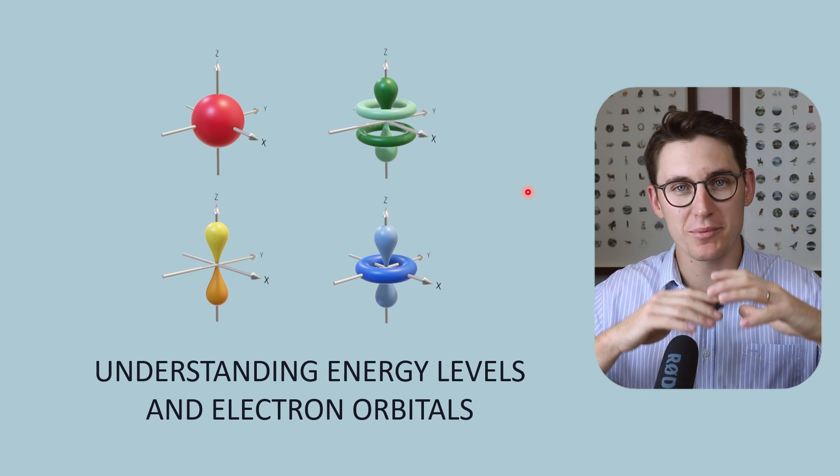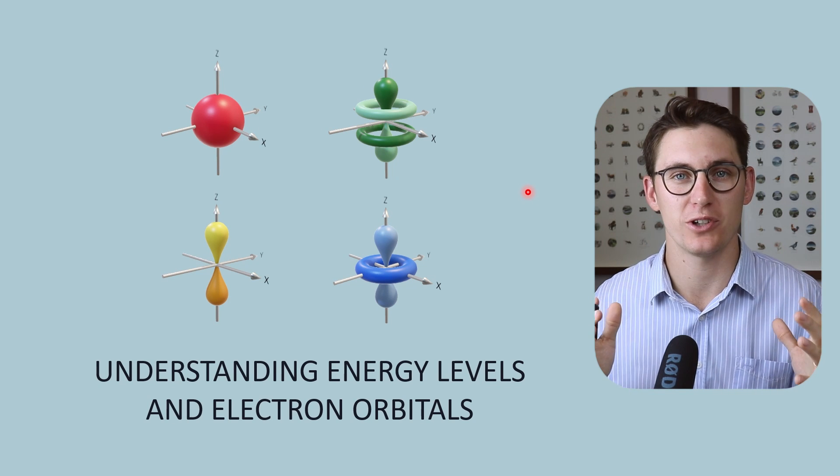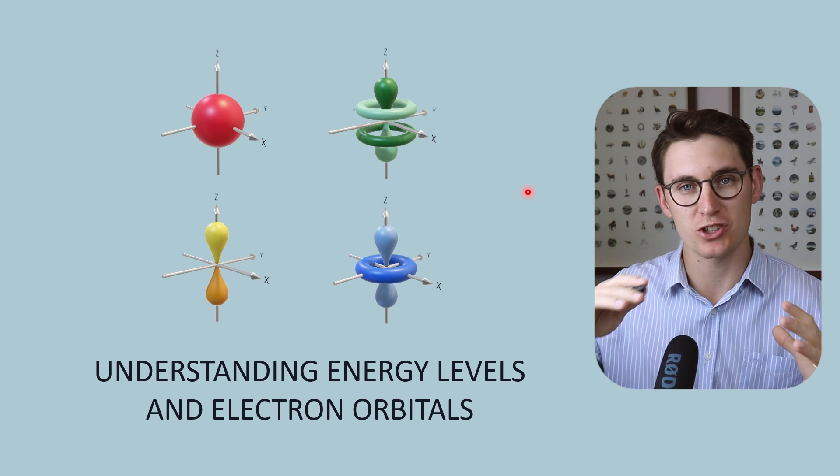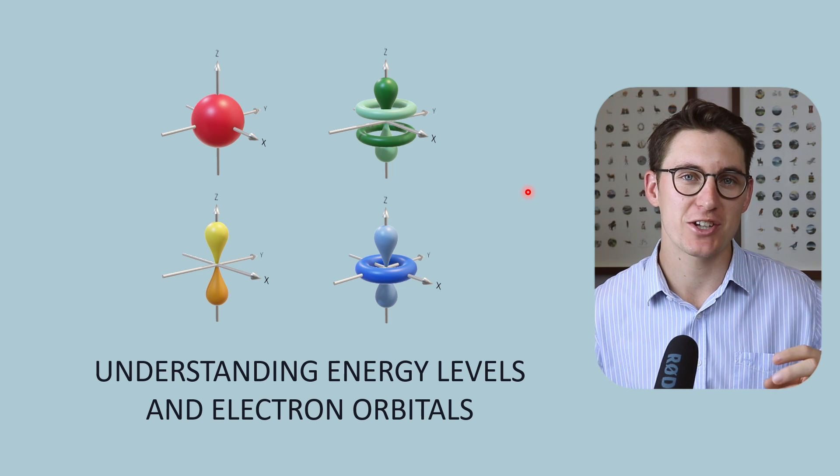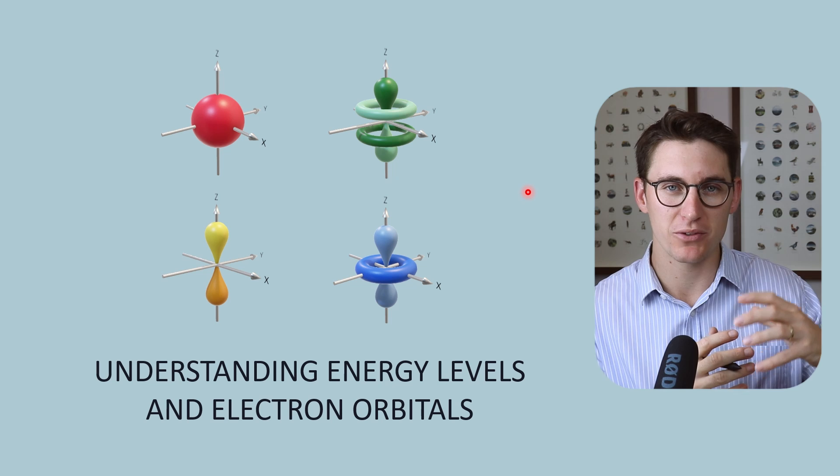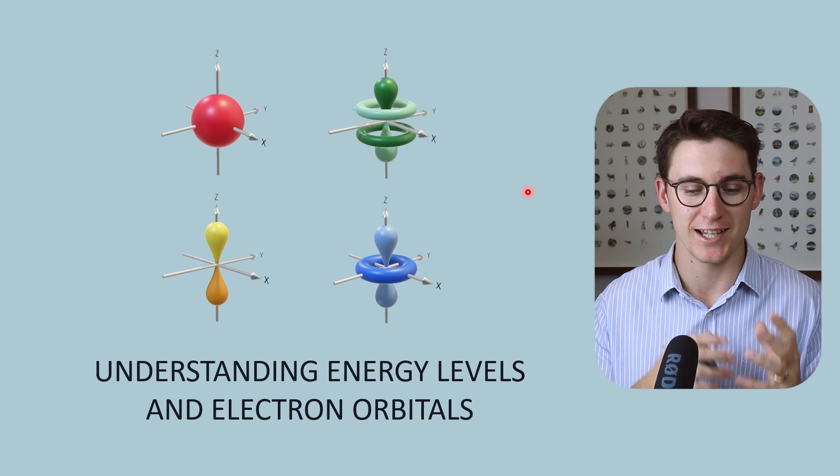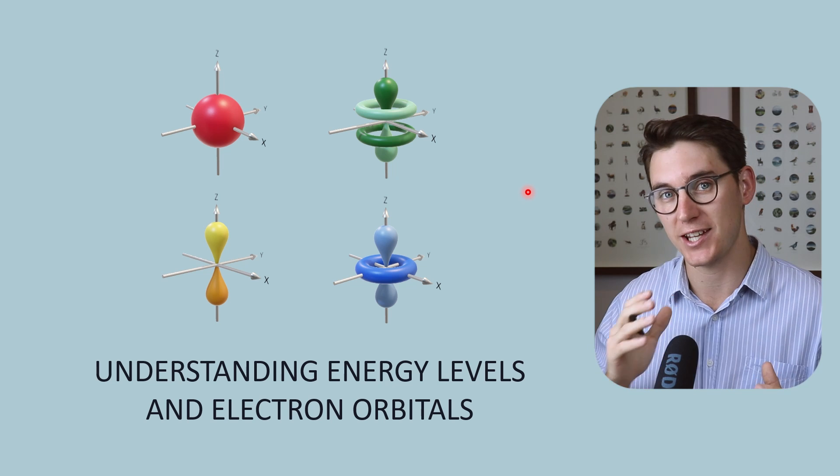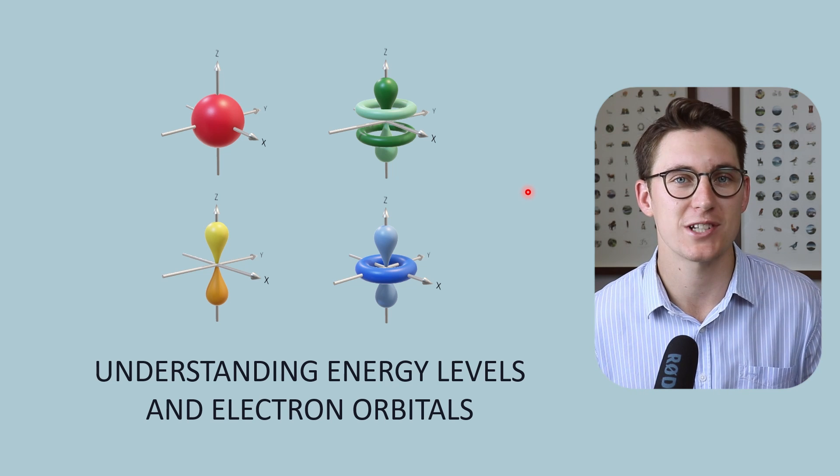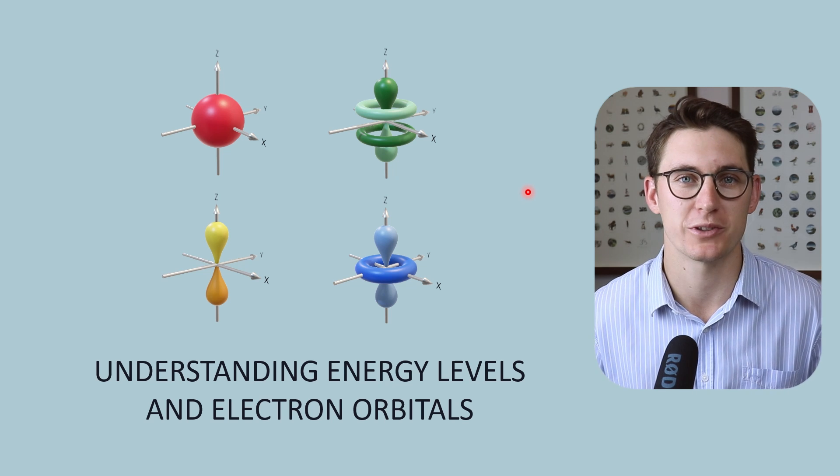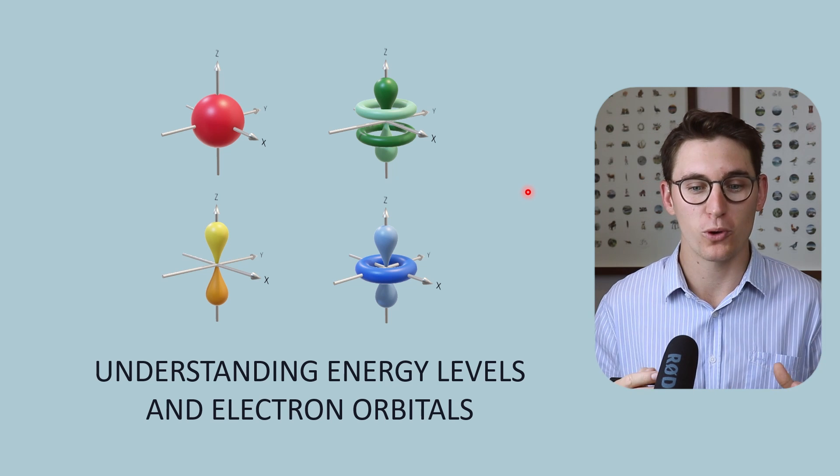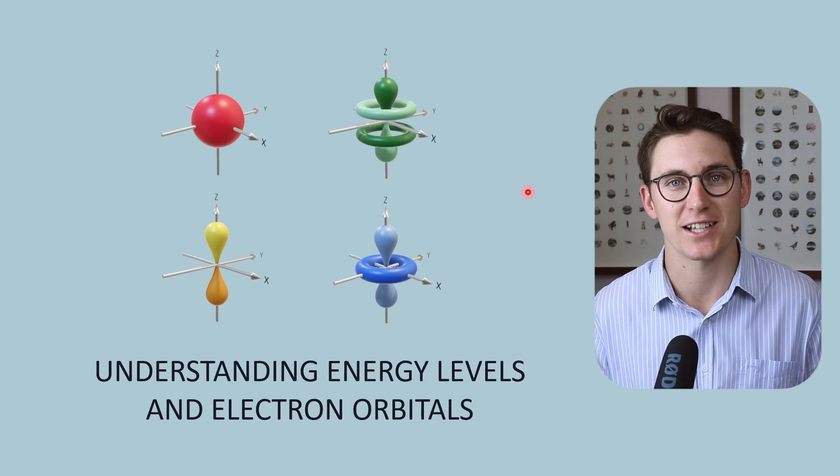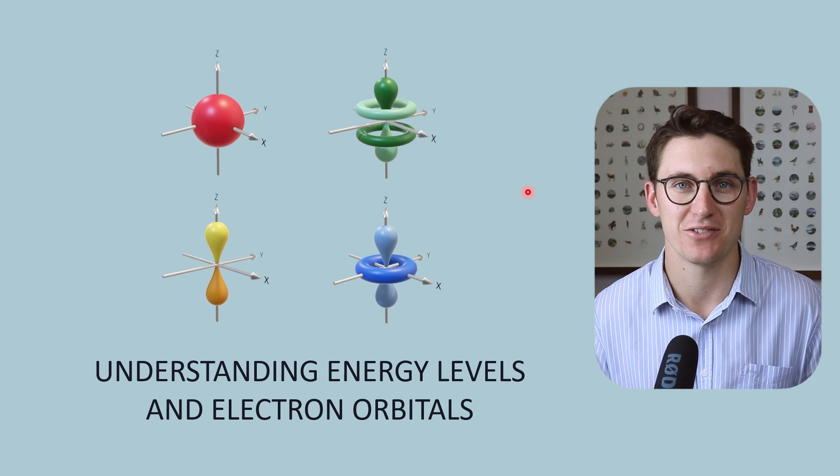So as we've just discussed, Bohr described electrons as orbiting around the nucleus in specific electron shells or energy levels. I mentioned briefly that those energy levels can be further subdivided into what is known as electron orbitals. Let's take a moment to understand those energy levels and look more closely at electron orbitals and how we go about filling those orbitals with electrons, and more importantly, why this is relevant to us in the context of radiology physics.